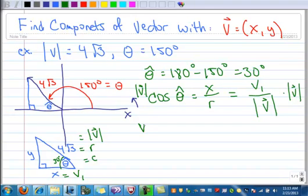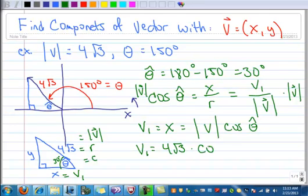So I end up with the v sub 1, which is really the x component. And that's going to be the magnitude times the cosine of theta hat. Let's go ahead and calculate this out. We know the magnitude is 4 times the square root of 3. And then we've got the cosine of 30 degrees. So let's use exact values here. So 4 times the square root of 3, times the square root of 3 over 2. And when you multiply that out, you get 6. So let me write the v sub 1 equals 6 up here, so we'll kind of keep track of all of these.